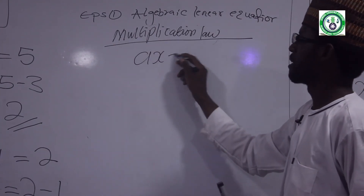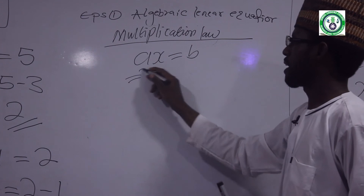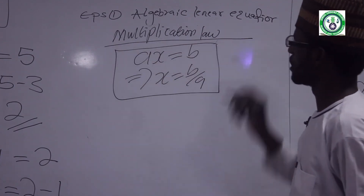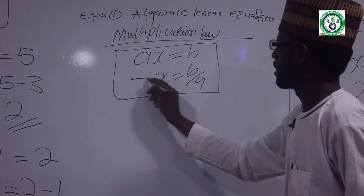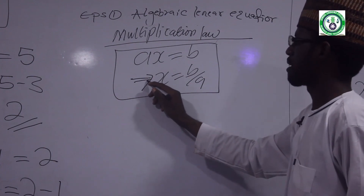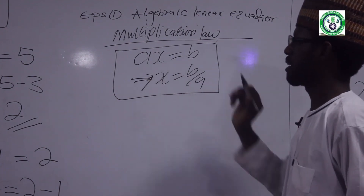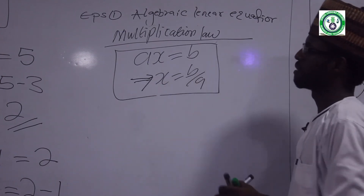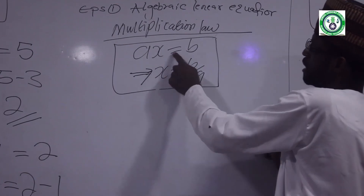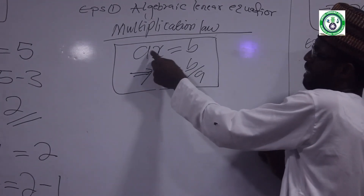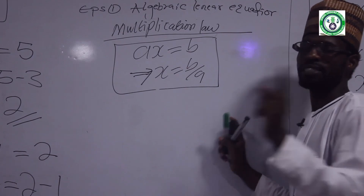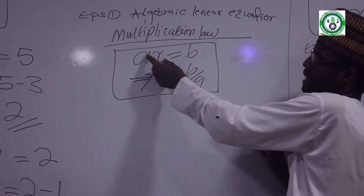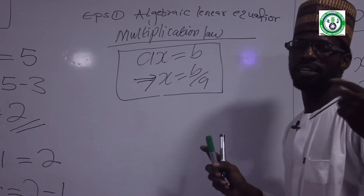Multiplication: AX equal to B. Therefore x equal to B over A. This is the rule. AX equals B means x and A are multiplied together — there is no addition or subtraction. X is equal to B over A. That is the algebraic expression for solving multiplication in linear equations.